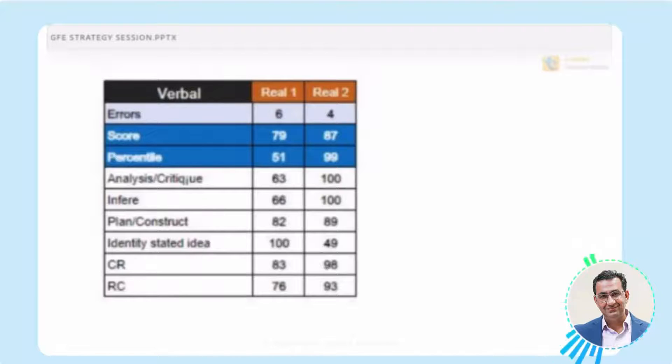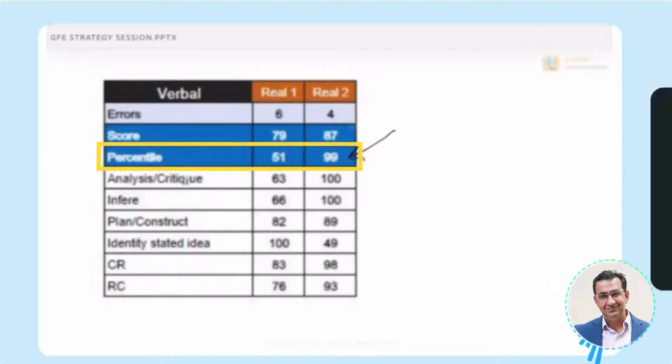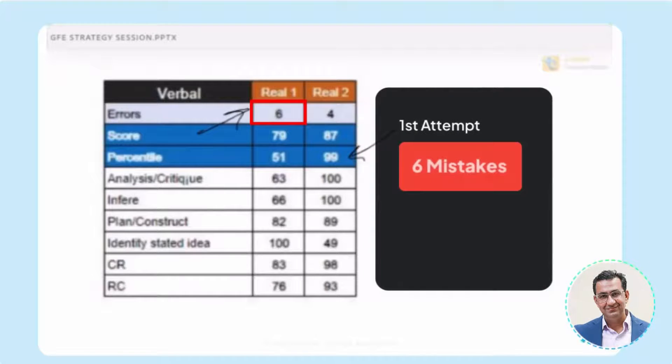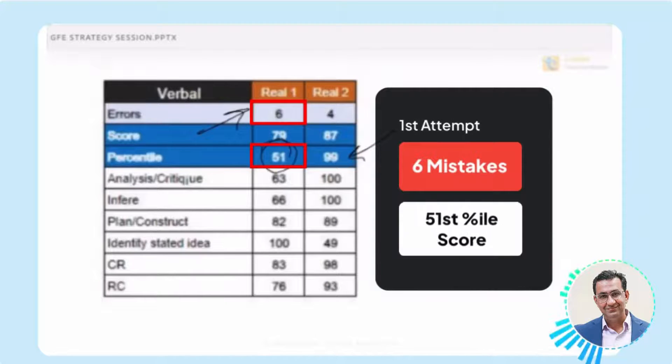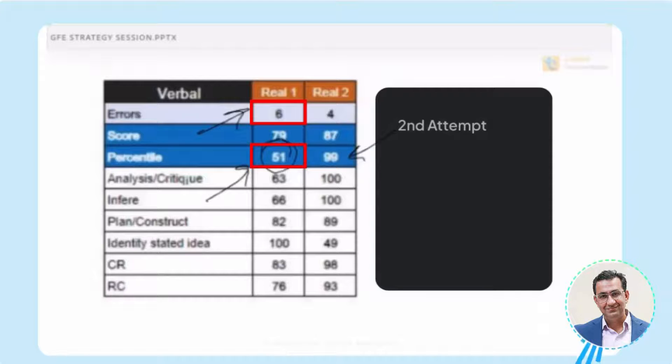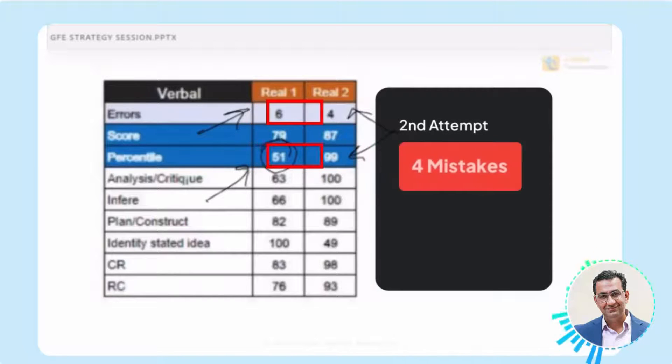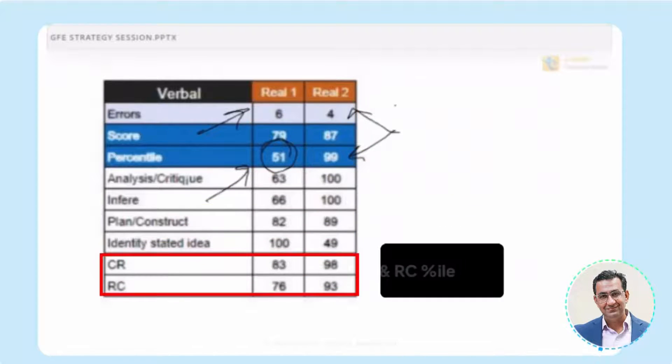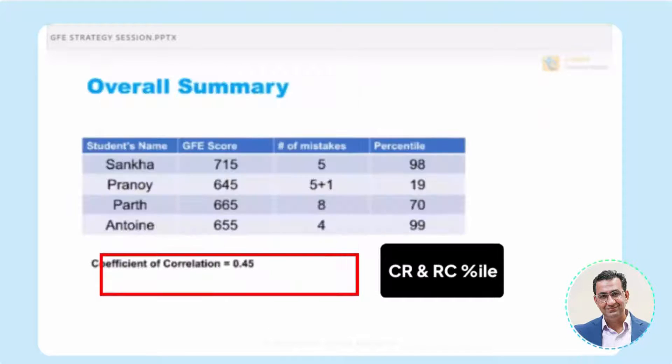This guy who took the test, who got 99th percentile, took the test for the second time. The first time he made six mistakes, he got a 51st percentile on global. And the second time he prepared, he made four mistakes, he got a 99th percentile. You can really see his CR and RC percentile as well over here.